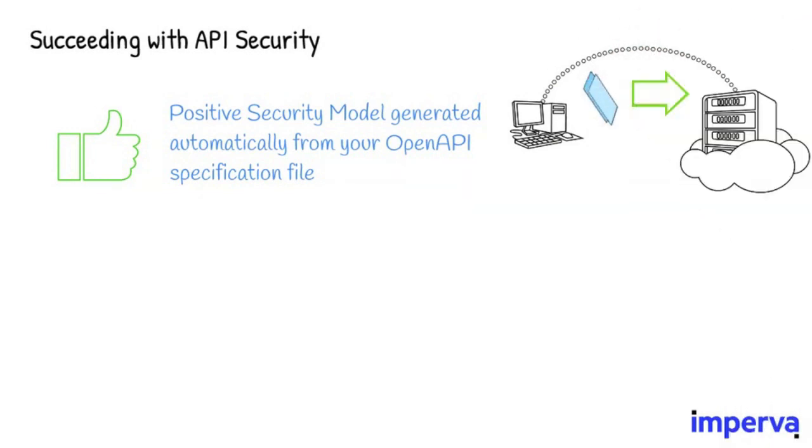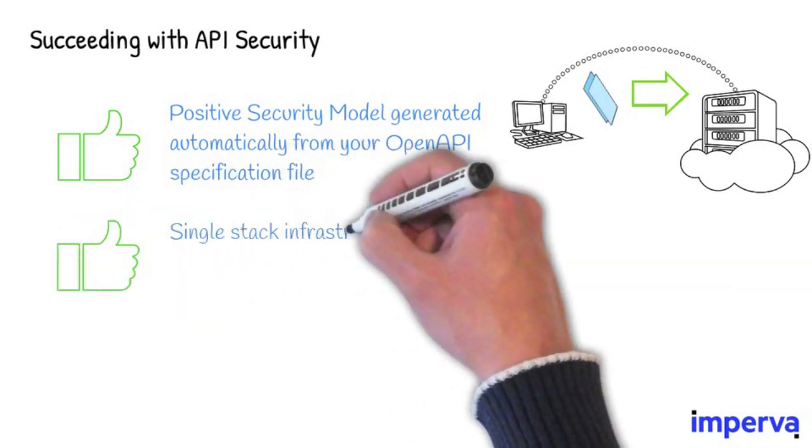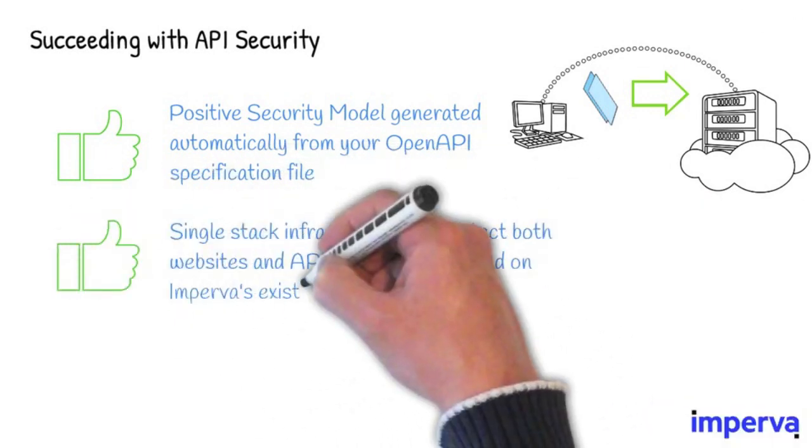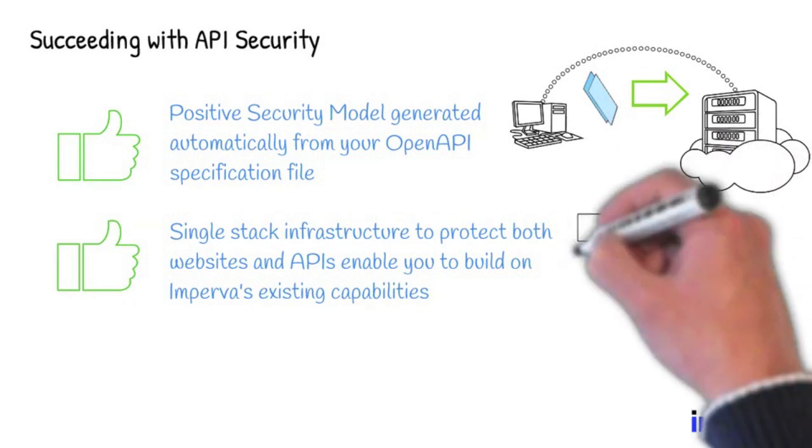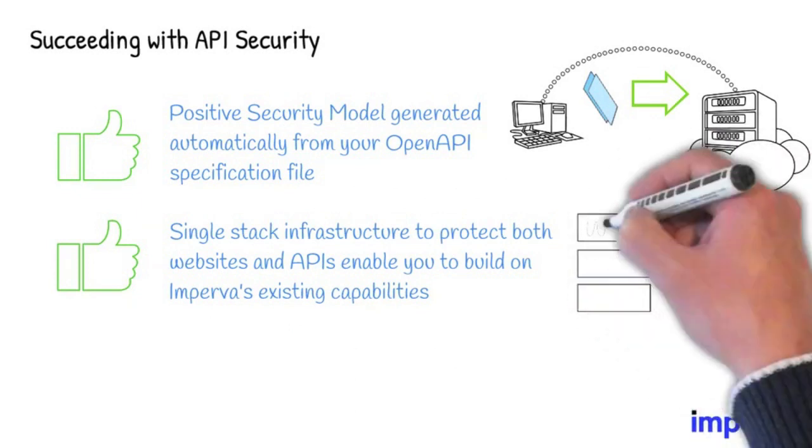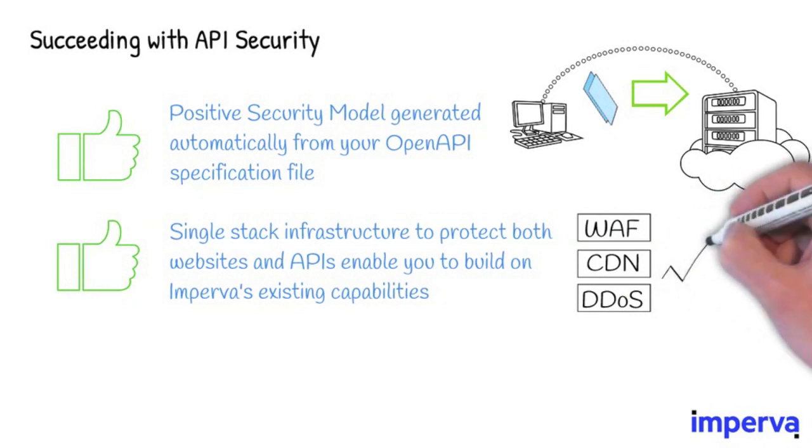Not only are you protecting your website and APIs, but you'll also benefit from a single panel of glass with the ability to take advantage of our other market-leading analyst recognized solutions found within all three FlexProtect tiers that API security comes standard within.